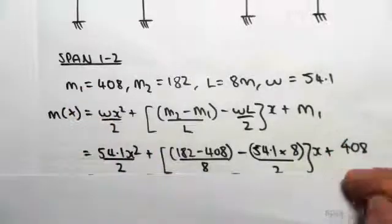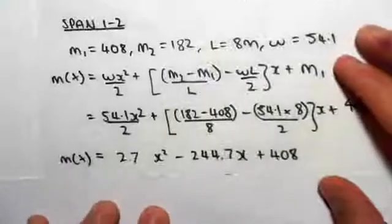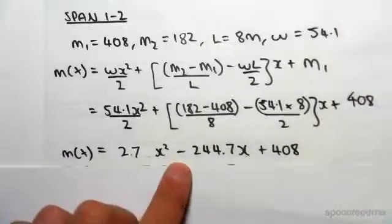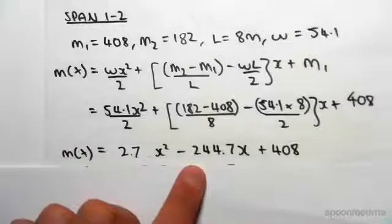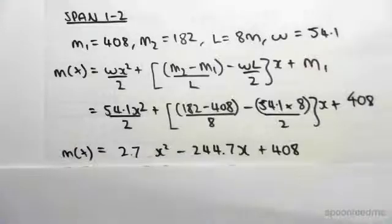Simplifying this, we get 27x squared minus 244.7x plus 408. Now we can use this equation to find some key points.